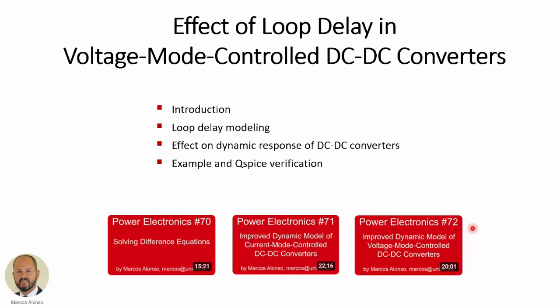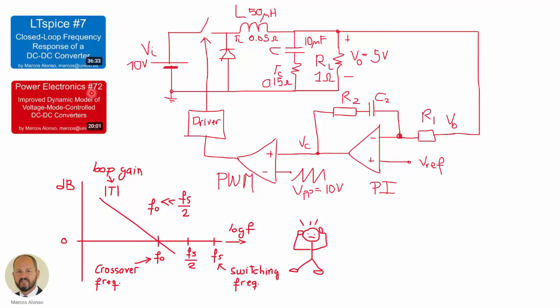Today we are going to see another issue, which is the effect of the loop delay in the dynamic behavior of DC-DC converters. In the previous video, Power Electronics No. 72, we saw this same slide and talked about the closed-loop operation of a DC-DC converter. The loop gain, represented as a function of frequency, has to be designed so that the crossover frequency is well below the switching frequency, because otherwise we can have stability issues due to the sampling effect of duty cycle generation.